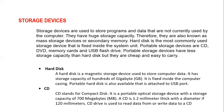Hard disk. Hard disk is a magnetic storage device used to store computer data. It has a storage capacity of hundreds of GBs. It is fixed inside the computer casing. A portable hard disk is also available that is attached to the USB port.